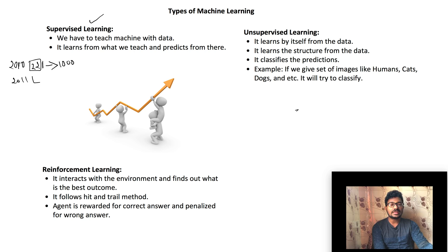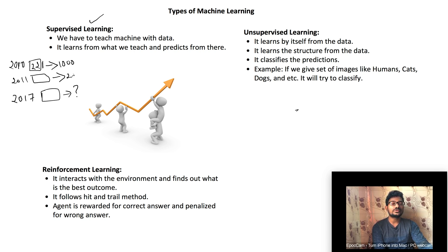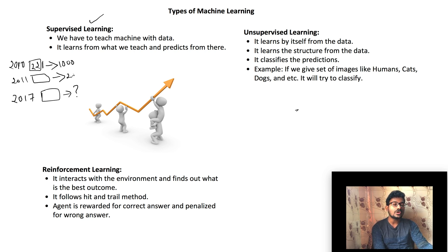For example, in 2011, the same size, same rooms — the price is 2000 rupees. The machine uses the given data and features. So in 2017, the machine is able to predict the price in the market. So supervised learning means we can tell the machine the data.